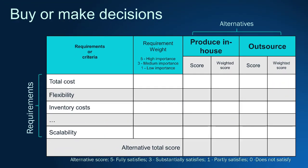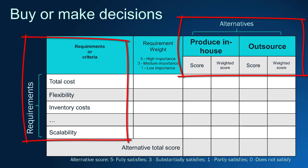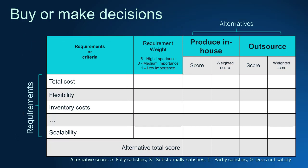Here is another very common application: the buy or make decision. In the columns, we have the two alternatives — buy or make — and in the rows, the business requirements. By scoring the pros and cons of each alternative, you can find what is better for the company.